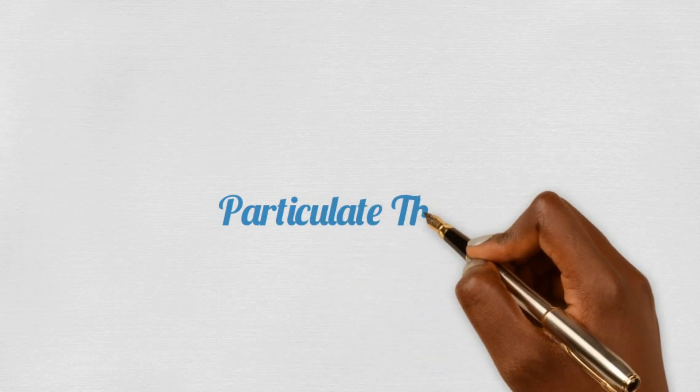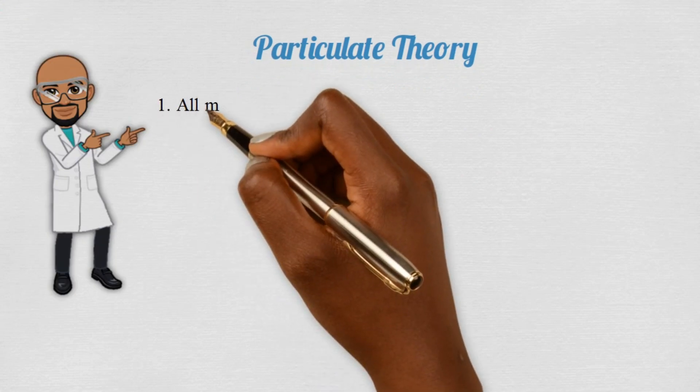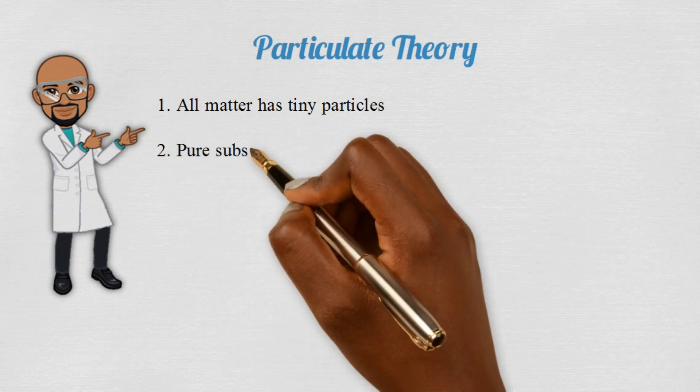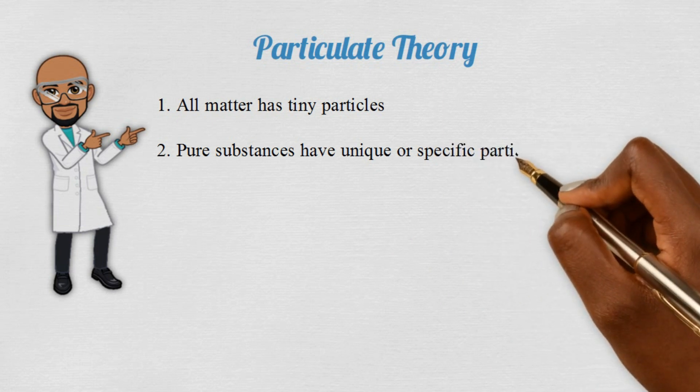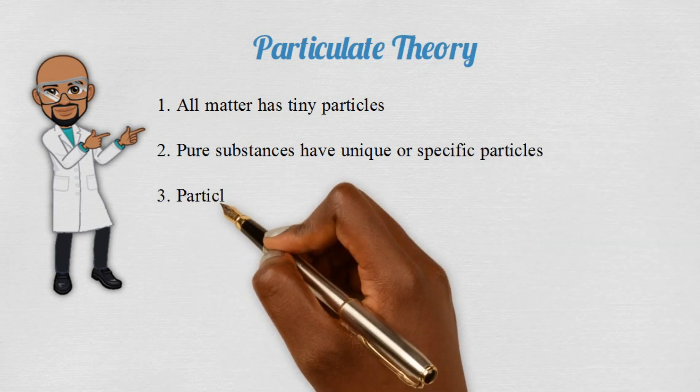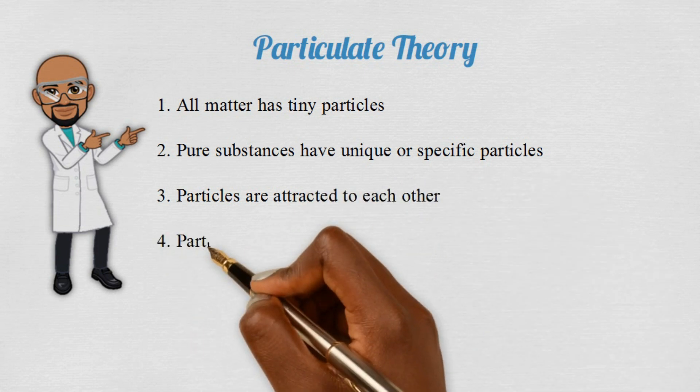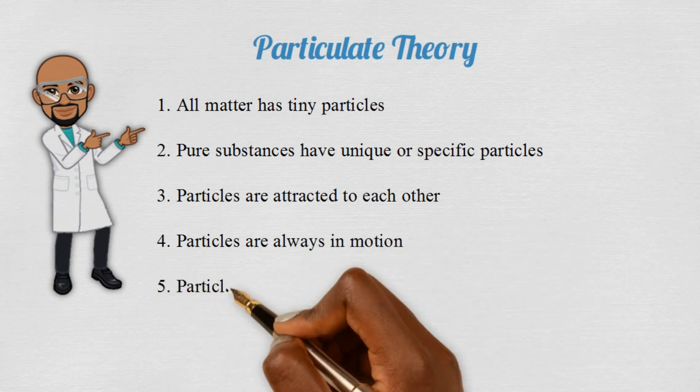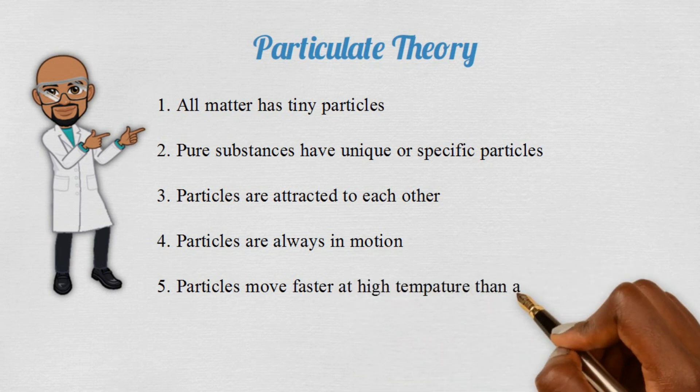Let us list the particulate theory of matter. All matter are made up of tiny particles. A substance in its pure form has its own unique or specific particles. Particles are attracted to each other. Particles are always in motion. And finally, particles at a higher temperature move about faster than particles at a lower temperature.